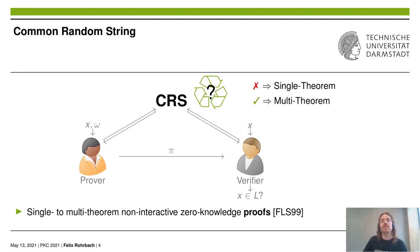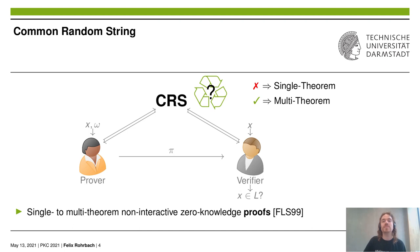For non-interactive Zero-Knowledge proofs, Feige, Lapidot, and Shamir showed a transformation which turns any single-theorem non-interactive Zero-Knowledge proof into a multi-theorem variant, assuming only the existence of a pseudorandom generator. There exists a folklore transformation based on this FLS transformation for non-interactive statistical Zero-Knowledge arguments, which however does not work for common random strings, and requires a string which is the image of a pseudorandom generator instead. Those structured strings are also called common reference strings, but it is arguably a lot harder to generate such structured strings which still can't be influenced by any party. Therefore, a natural question is whether such a transformation can be given in the common random string model, and under which assumptions.